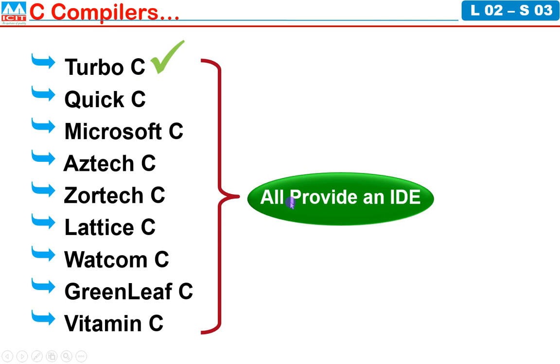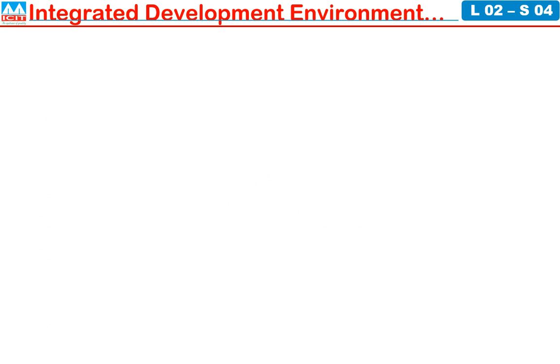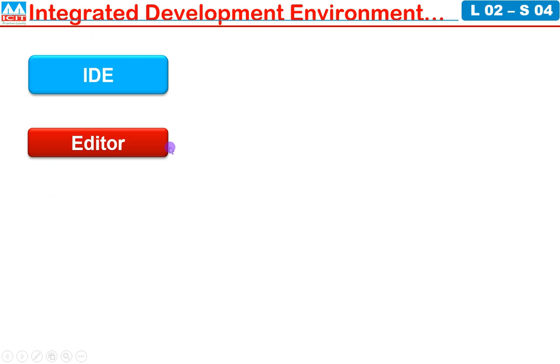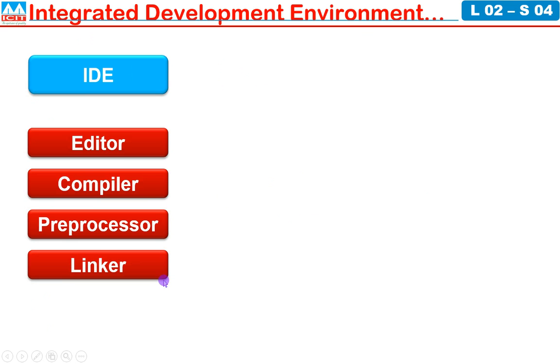All these provide an IDE. IDE means Integrated Development Environment. Let us look at this in the next slide. Program Development Environment has components: Editor first, to help typing and editing of program. Then the compiler. The third part has two more components: Pre-Processor and Linker.